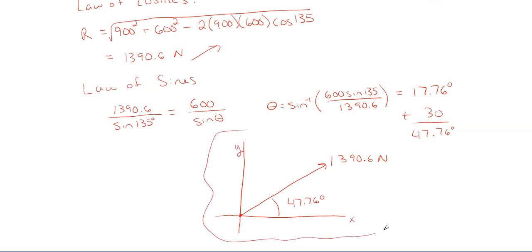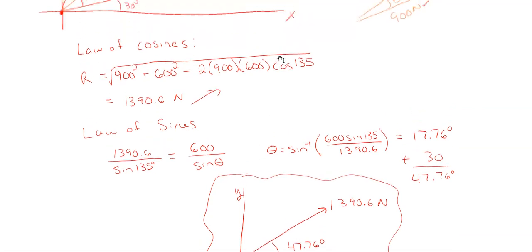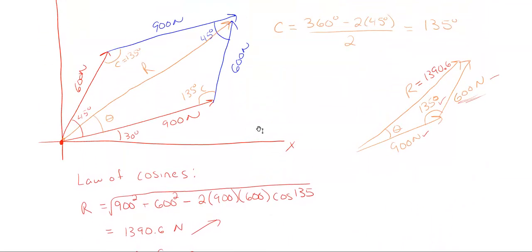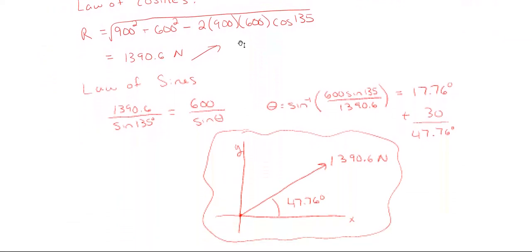As stated, it does not matter if you use the top or bottom triangle when looking at your parallelogram. Overall, these are the steps: first, draw your parallelogram; second, determine the angle opposite your resultant; then utilize one of the triangles; use the law of cosines to find the resultant; use the law of sines to find your internal angles; and then use that angle to find the final angle off of the x-axis.